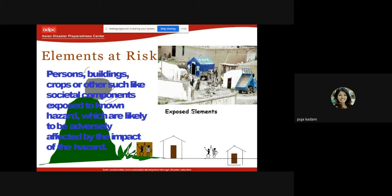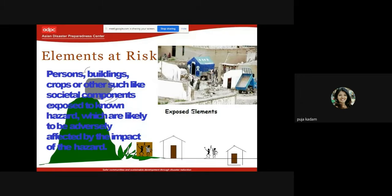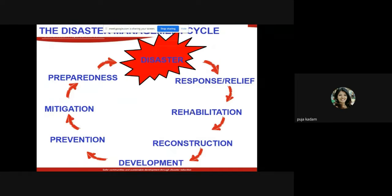Elements at risk are the things that are going to get affected — people, buildings, crops, and other societal components exposed to known hazards which are likely to be adversely affected by the impact of that hazard. Essentially, every component exposed to a hazard is an element at risk.